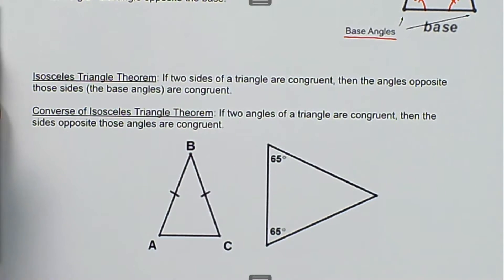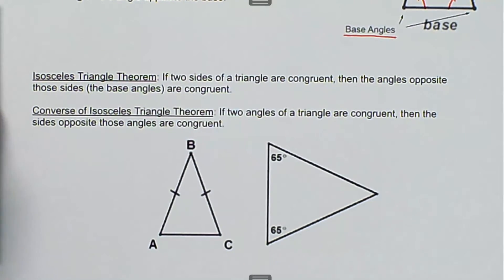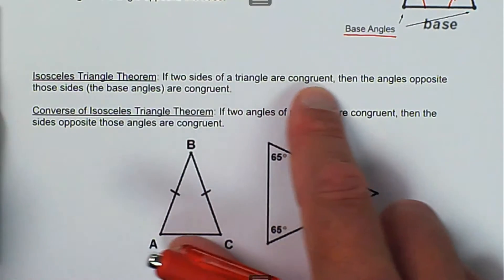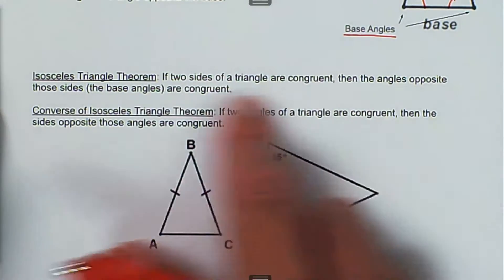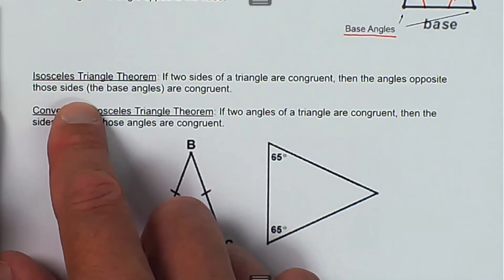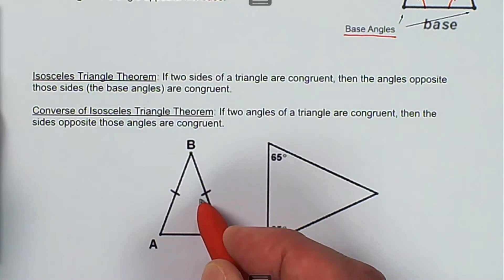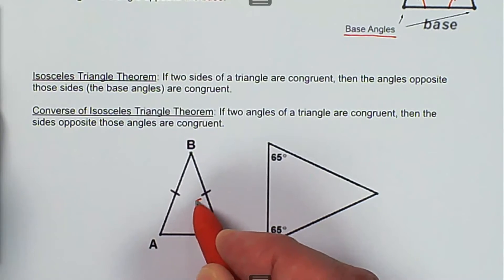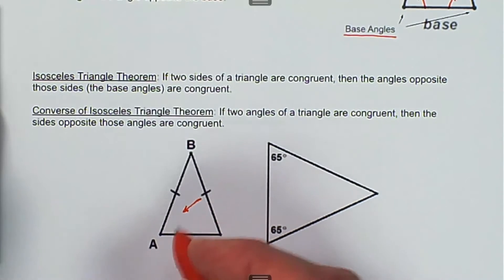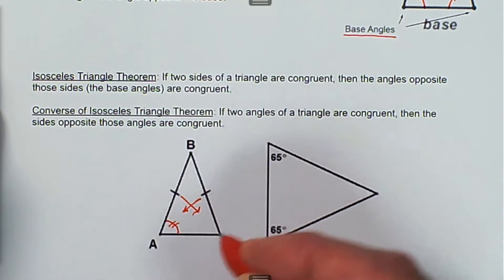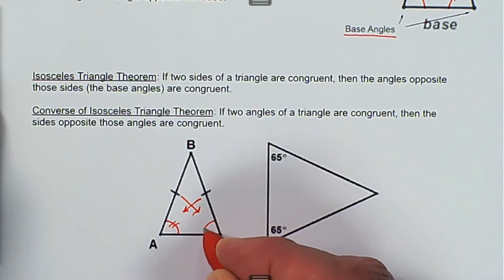Then we have the Isosceles Triangle Theorem: if two sides of a triangle are congruent, then the angles opposite those sides — the base angles — are congruent. So here we have two congruent sides, and that means that the angles opposite those sides are also congruent.